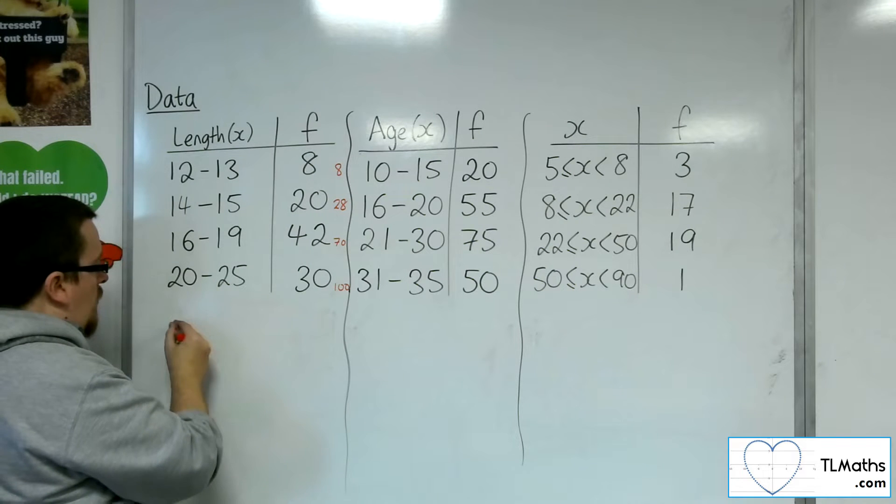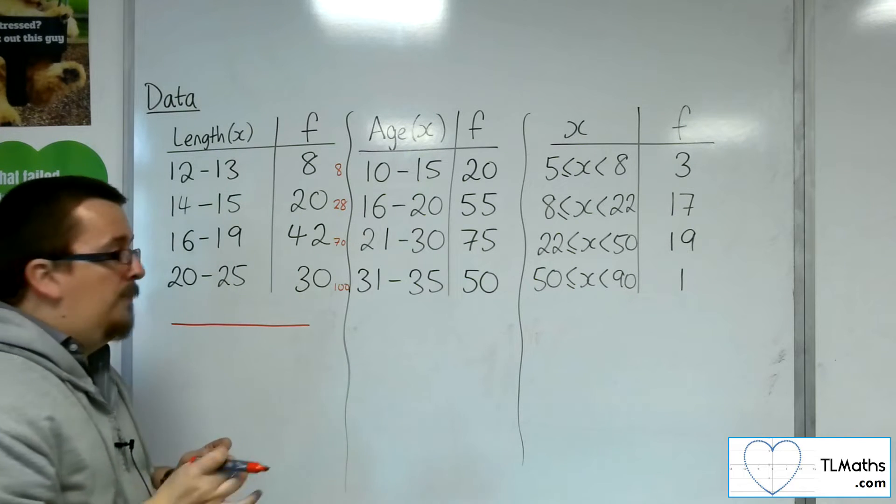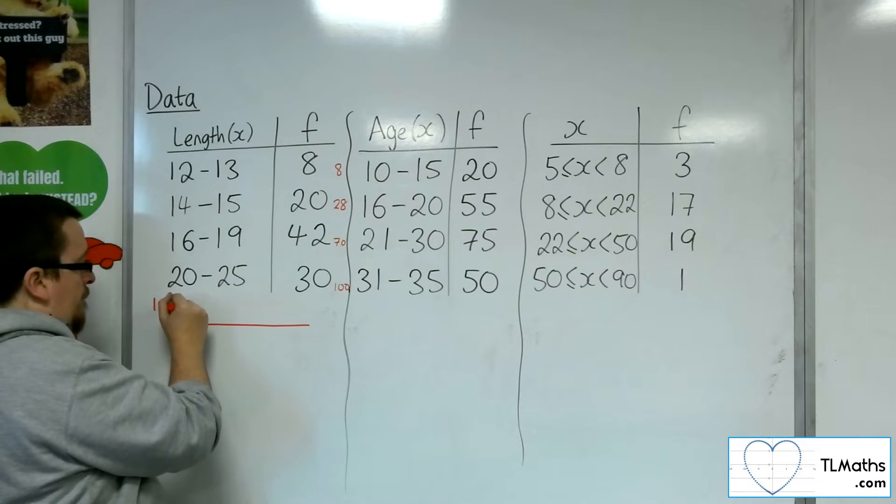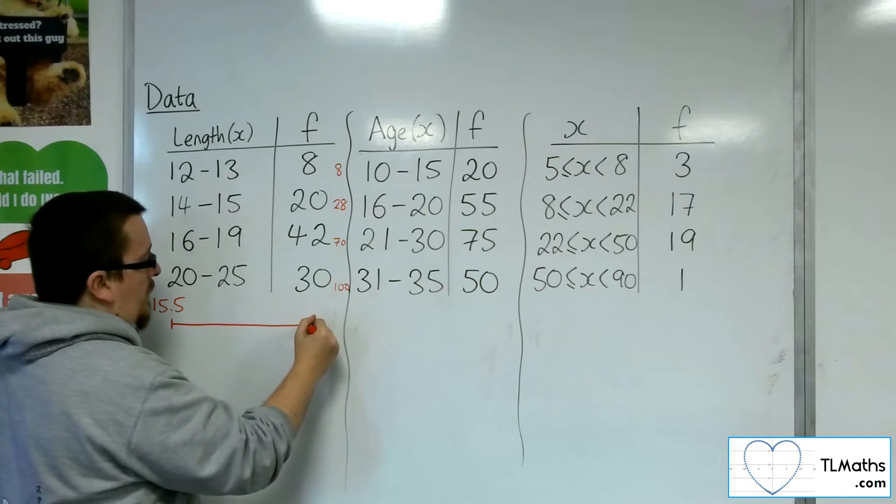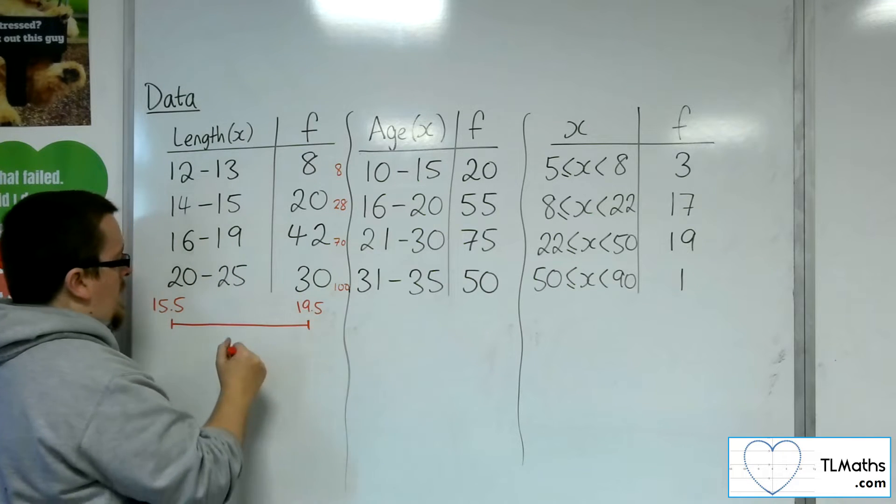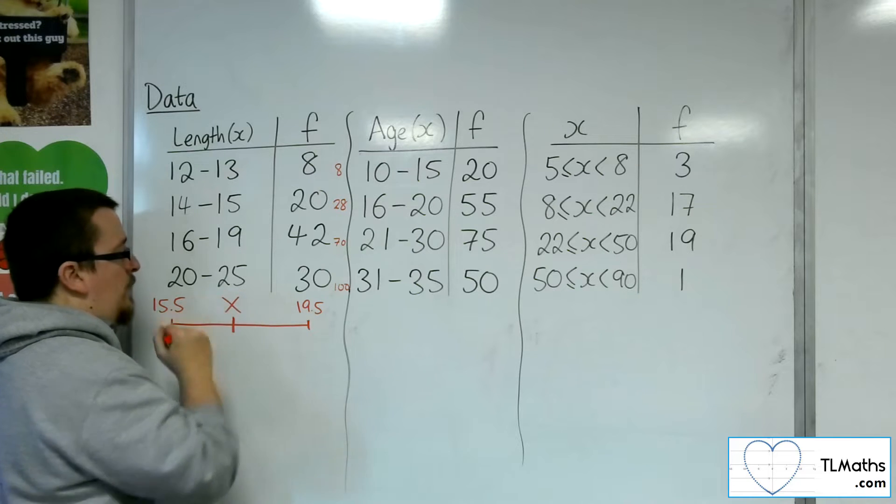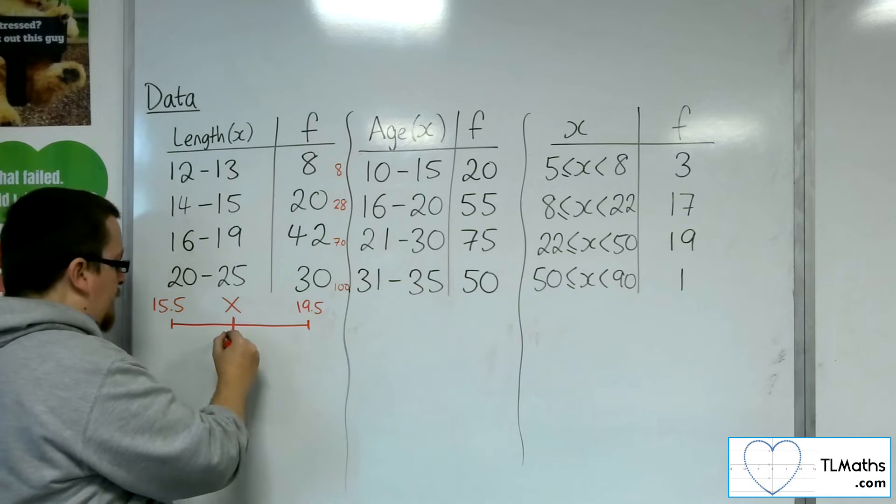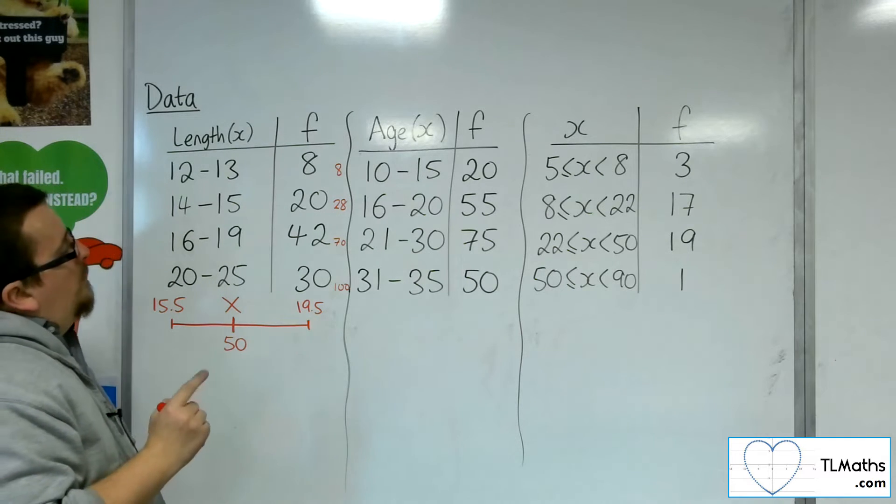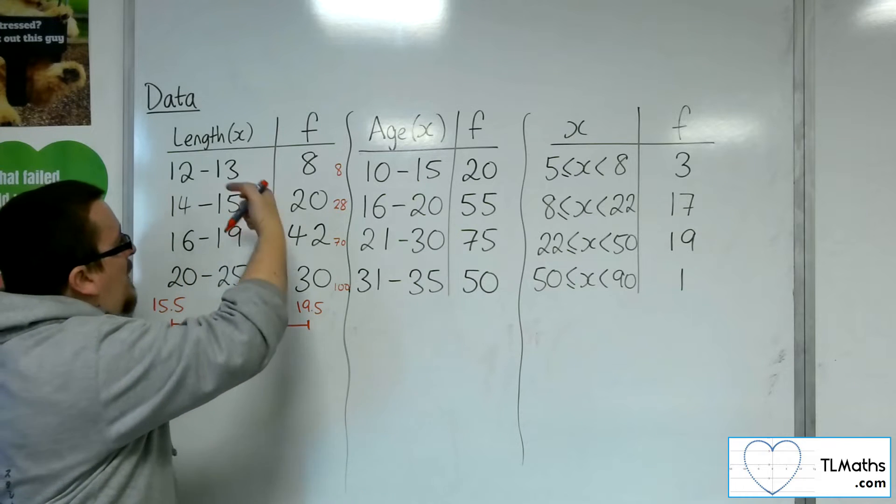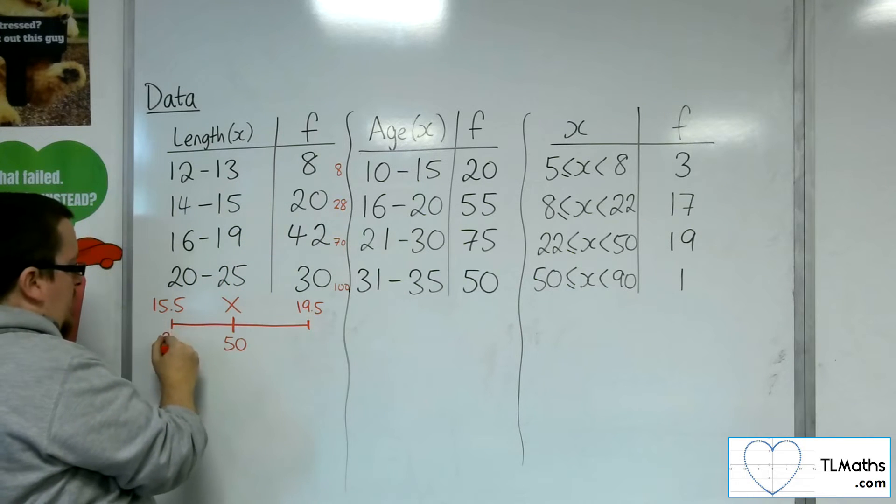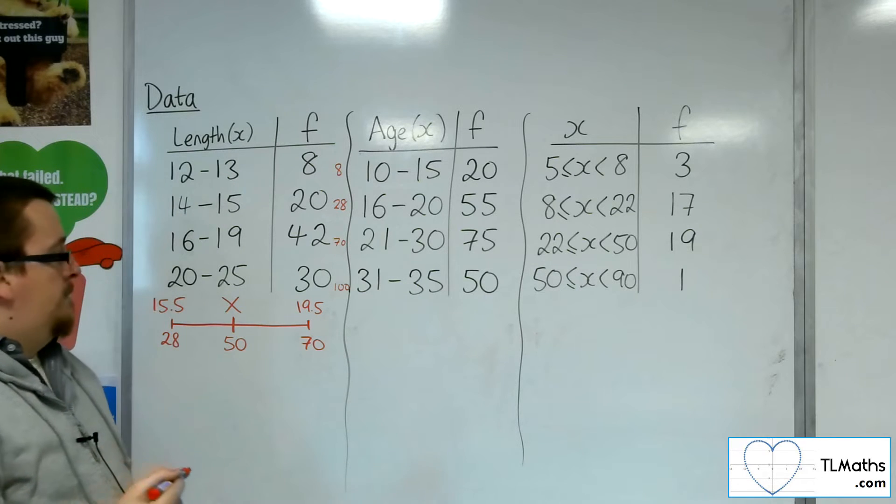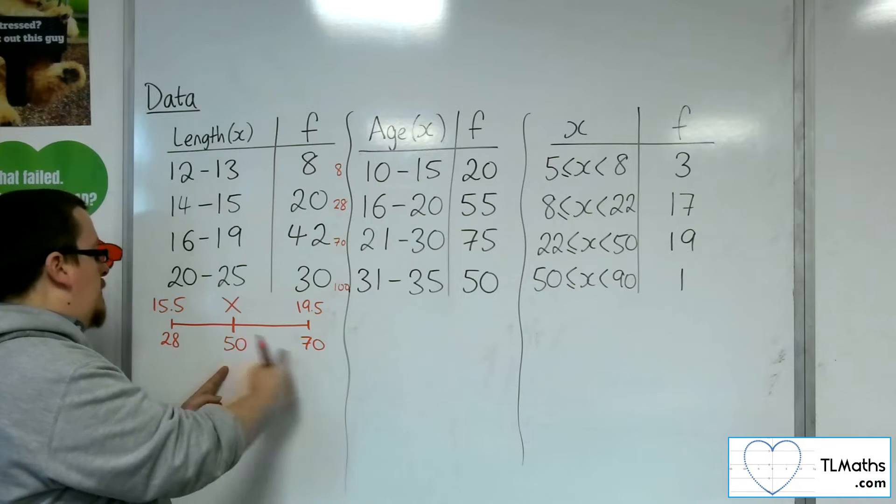So that means that the 50th position must be in this grouping. So if I draw a number line to represent that group, remember that would be going from 15.5 up to 19.5. And my median value is somewhere between the two, at the 50th position. Now, by the time I come into the group, I've gone through 28 bits of data. And by the time I leave the group, I've gone through 70 bits of data. So the 50th position is somewhere within.